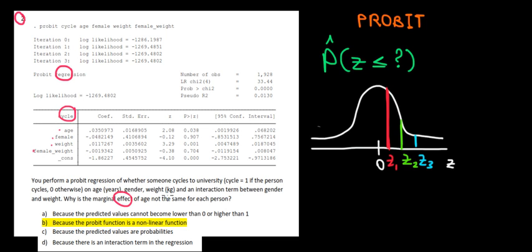Why is the marginal effect of age not the same for each person? So let's see. First of all, when we're dealing with probit, what we're regressing, what we're estimating is a certain probability from the Z distribution. So we're going to have a probability that Z is less than or equal to a certain number. That certain number is based on the regression, is based on the result that we're going to estimate from this data.